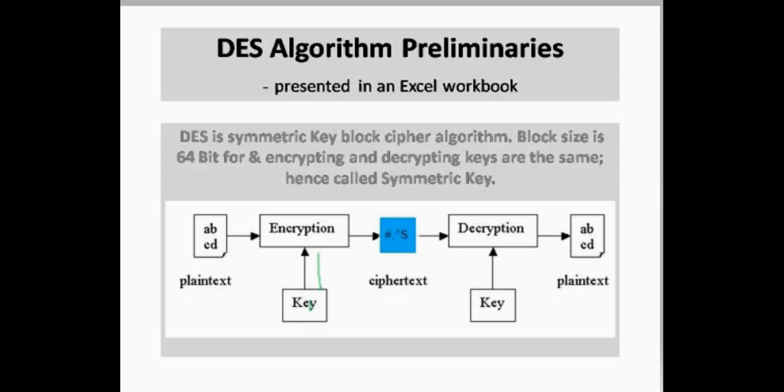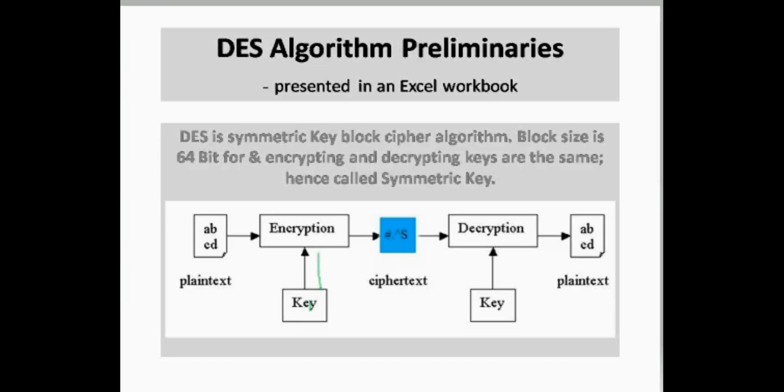In an encryption process we feed a key and the message into an algorithm of our choice to get the coded ciphertext as output. At the other end, the ciphertext and the same key or different keys are fed into the decryption algorithm to retrieve the original message.